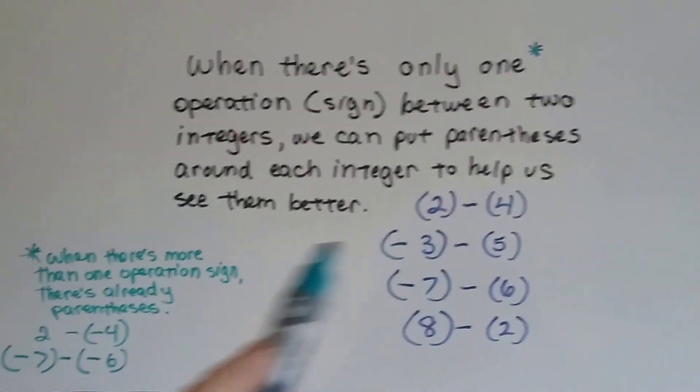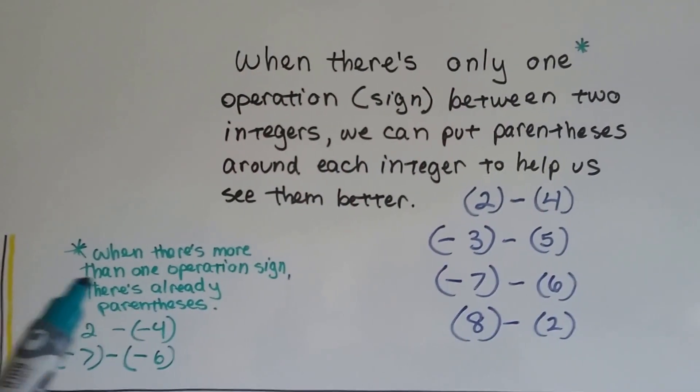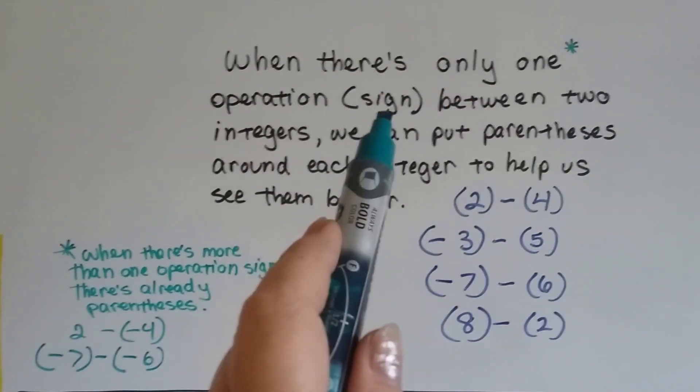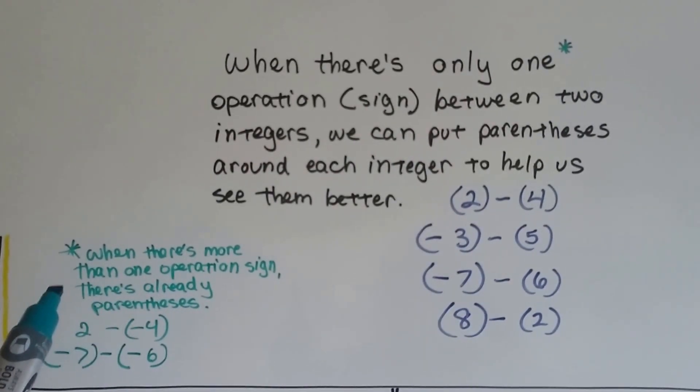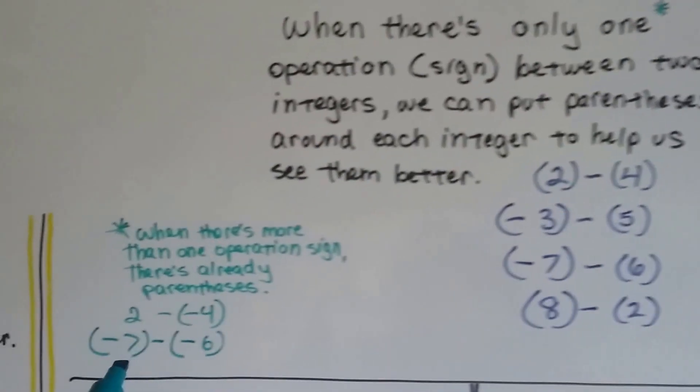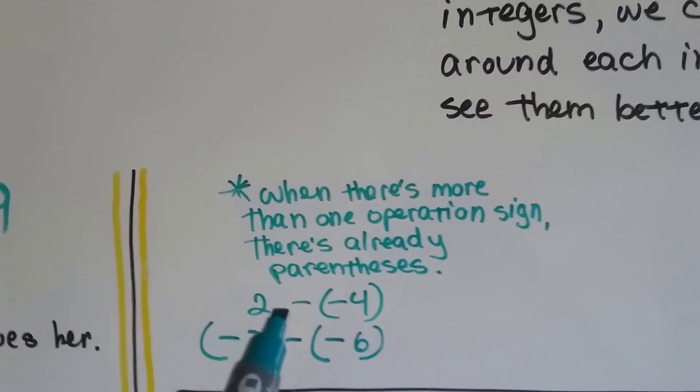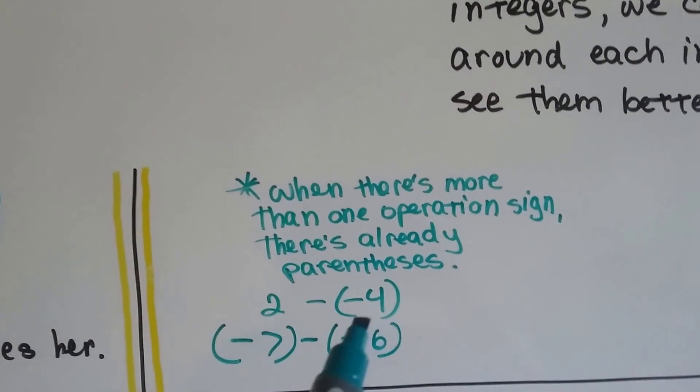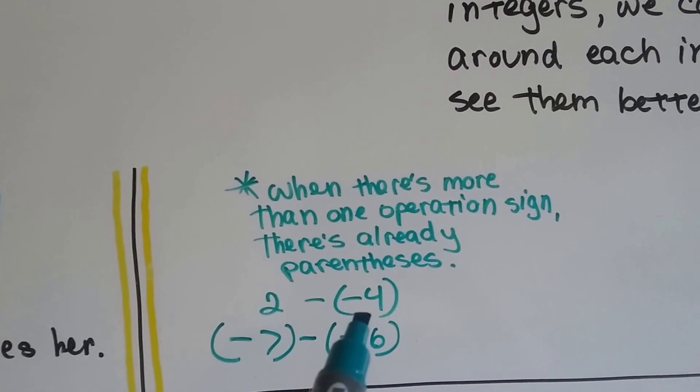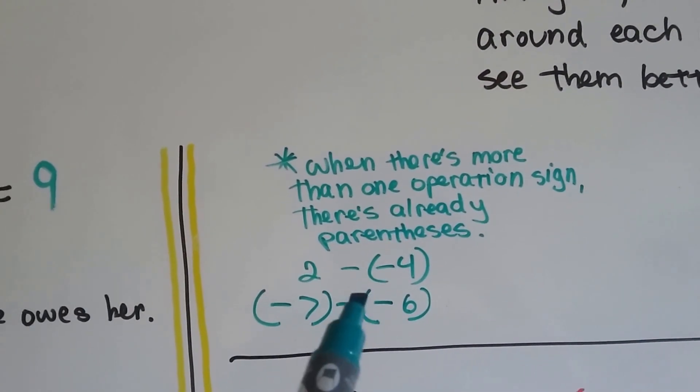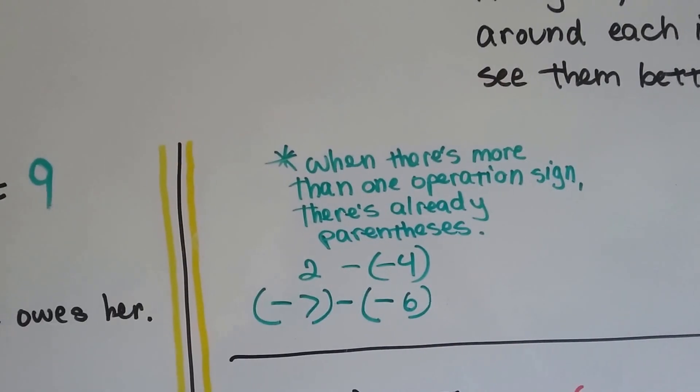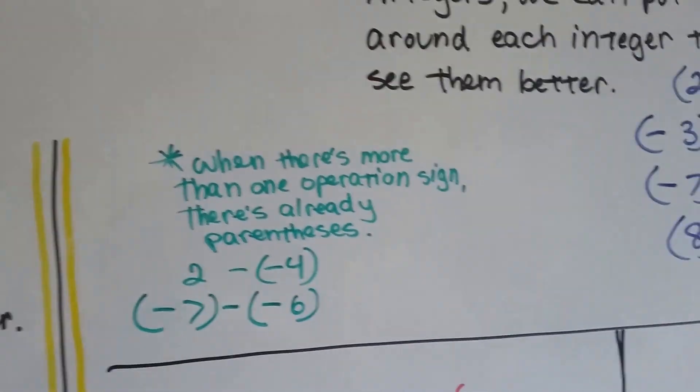Now the reason there's an asterisk here is when there's more than one operation, because it says when there's only one operation or one sign. When there's more than one operation sign, there's already parentheses. If you've got 2 minus negative 4, it's already going to have parentheses around the negative 4. And if we've got negative 7 minus negative 6, it's already going to have parentheses around it. If it doesn't, then it's a typo in the book.